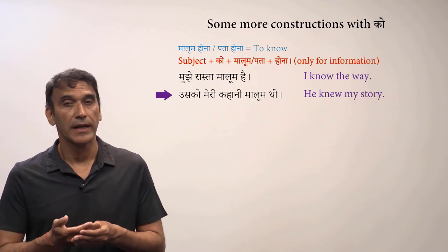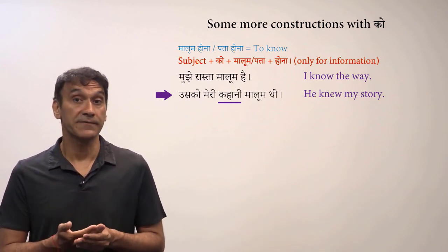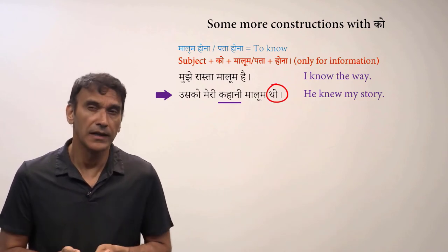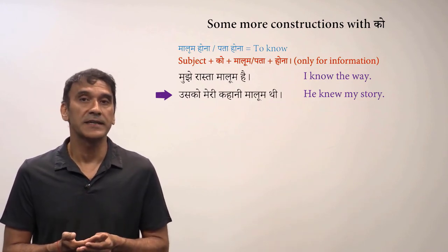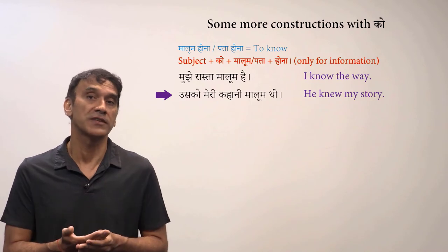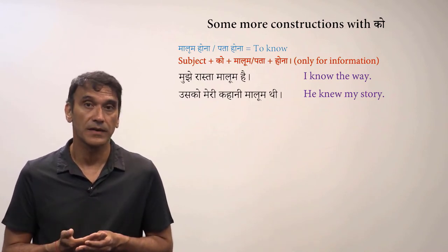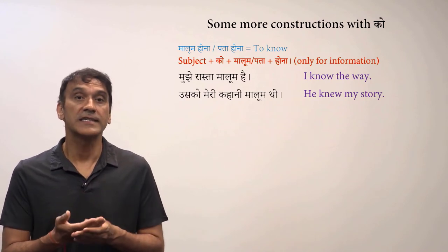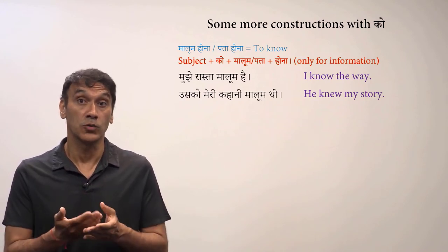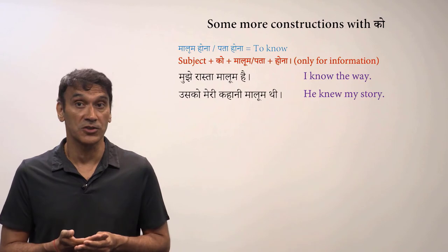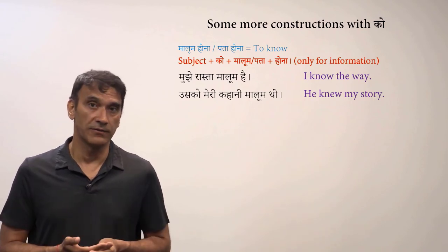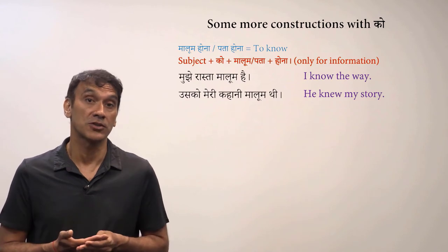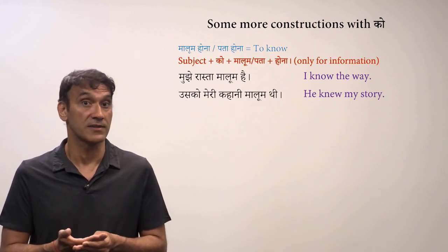Let's take some example sentences. 'Mujhe rasta malum hai' — I know the way. 'Usko meri kahani malum thi' — he knew my story. In the second example, 'kahani' is feminine, so the verb in the past tense is also feminine. This means the verb is dictated by the thing known — the information expressed in the sentence. The verb changes according to number and gender, since the subject takes the postposition 'ko' and will not dictate the verb.